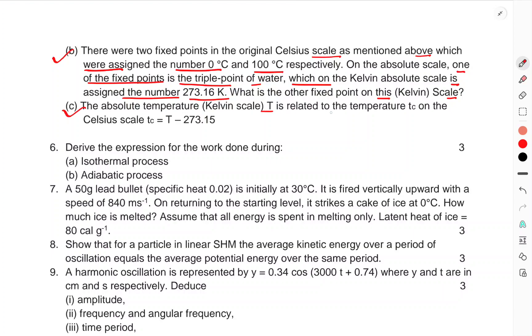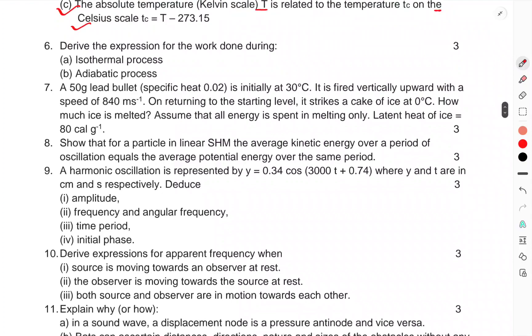(c) The absolute temperature of Kelvin scale is related to the temperature on the Celsius scale. Question 6: Derive the expression for the work done during isothermal process and adiabatic process.